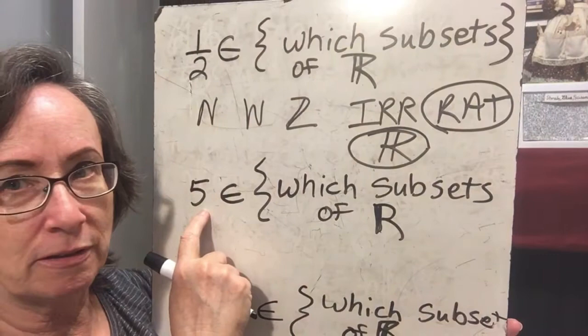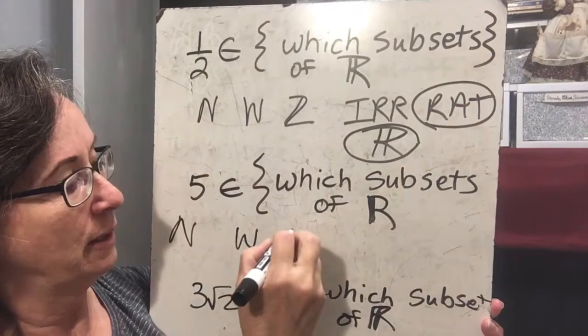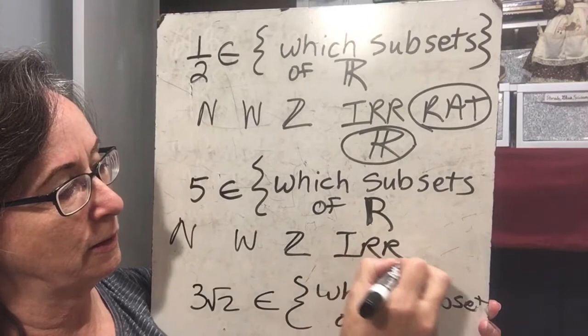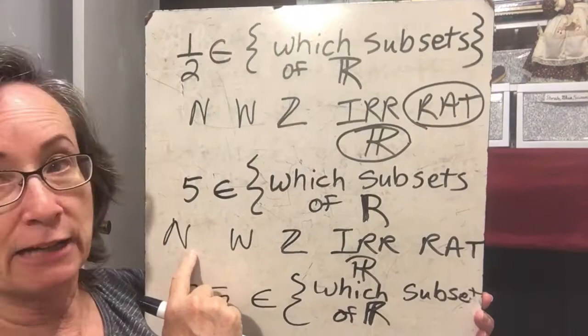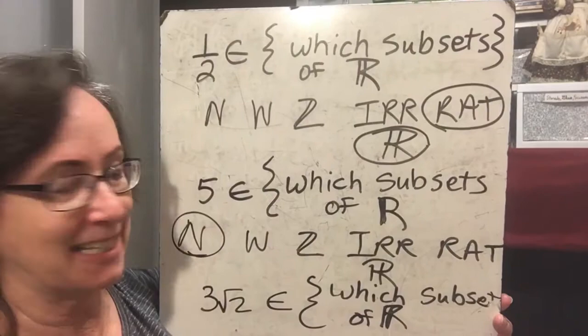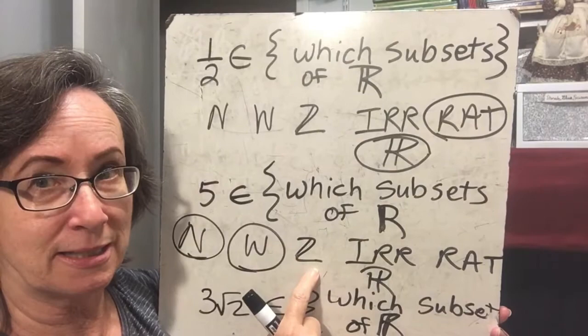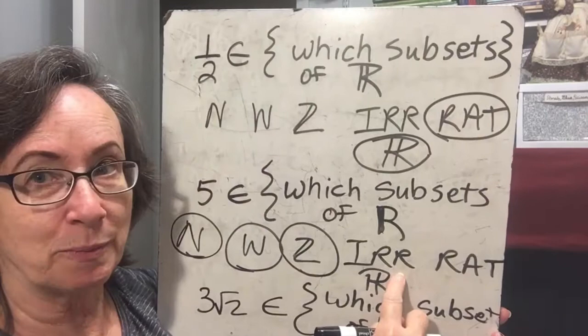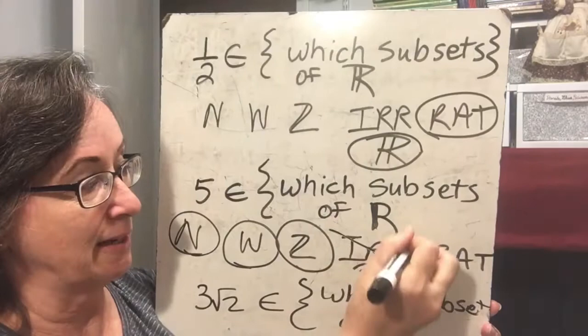Five is an element of which subsets of the real number system? We have natural, whole, integer, irrational, rational, and real. Natural numbers are {1, 2, 3, 4, 5, 6, 7, ...} — five is an element of that set. Whole numbers are all natural numbers plus zero — five is an element. Integers are all whole numbers and their opposites — five is an element. Irrational means it can't be expressed as a fraction, but five over one is a fraction, so it is not irrational. Five is rational and it is a real number.